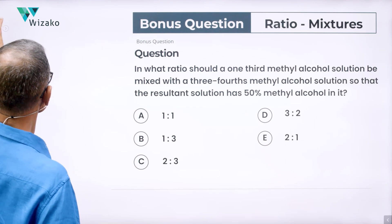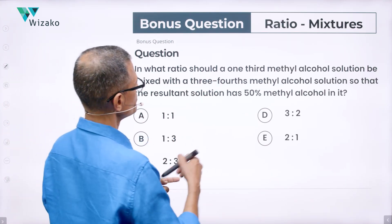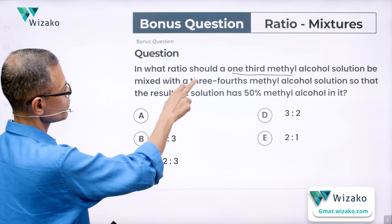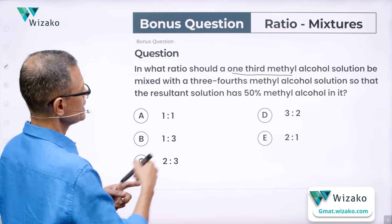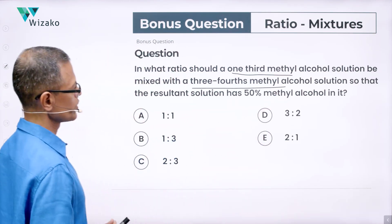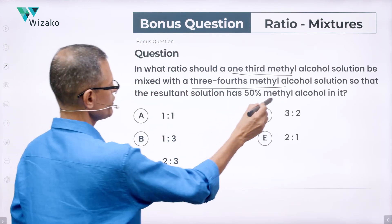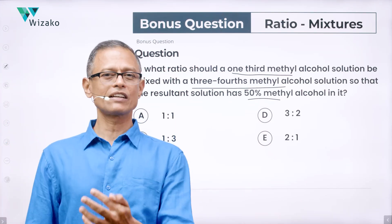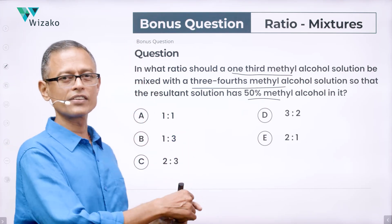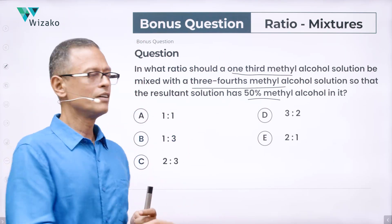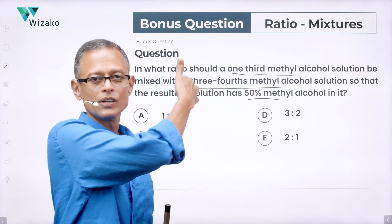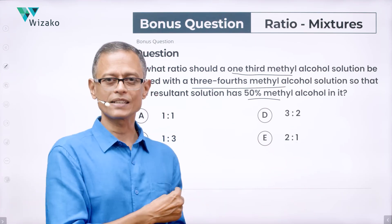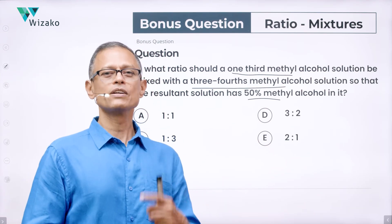Now let's look at a bonus question. In what ratio should a mixture which comprises one-third methyl alcohol be mixed? What ratio should a one-third methyl alcohol solution be mixed with a three-fourths methyl alcohol solution so that the resultant solution has 50% methyl alcohol in it? Try and solve this bonus question even to start with using the rule of allegation method. So set the rule of allegation, low concentration, high concentration and what is the mean? 50% which is the mean, write it as 1 by 2. You have one-third, three-fourths, 1 by 2. Figure out how this basically pans out. See which of these five answer options is right and post your answers to the comment section of this video. Best wishes for your GMAT preparation.